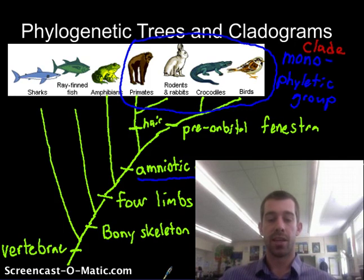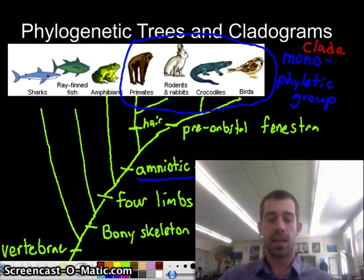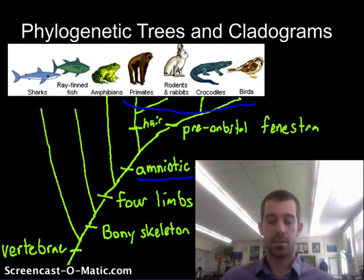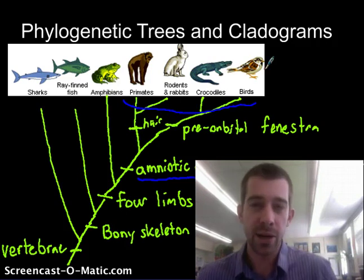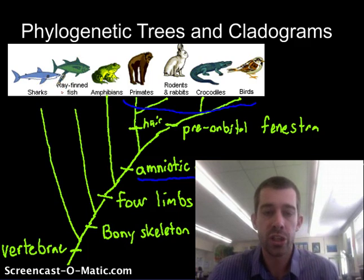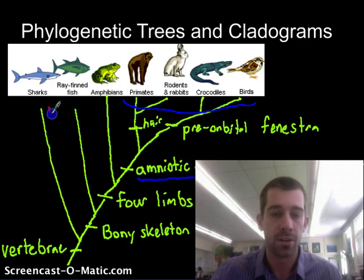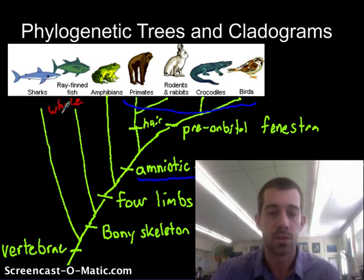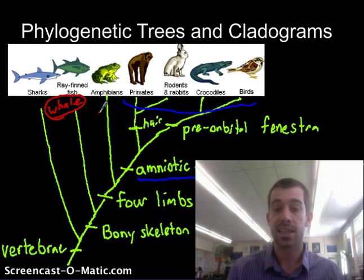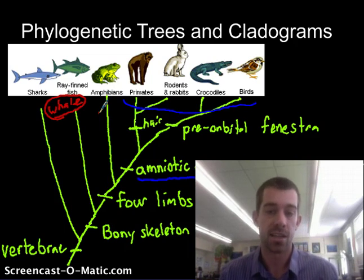Let's do one last thing with our diagram — let's ask where we should put another organism, and that organism is going to be whales. Where would we add a whale to all of this? If we look at the pictures, these fish look the most like a whale — they live in the ocean and they've got fins. So if we try to put the whale right there, we can test to see if that works, because a phylogenetic tree is really a hypothesis about how evolution worked, and then you can test it to see if it really did.